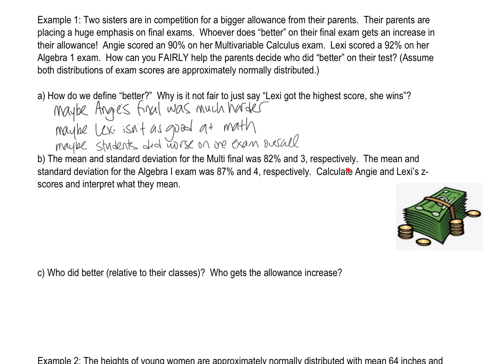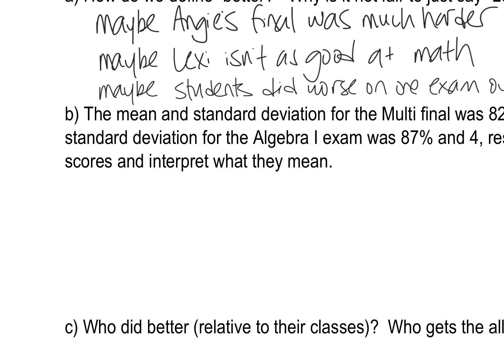So let's calculate Angie and Lexi's Z-scores and interpret what they mean. So I'm going to use that formula that you have written above. So the Z-score formula is Z equals X minus mean over standard deviation. I'm going to do Angie's score and I'm going to do Lexi's score.